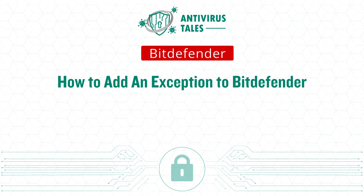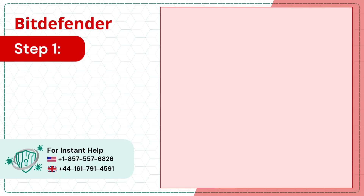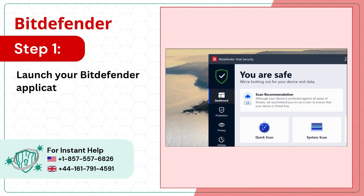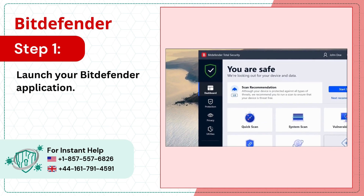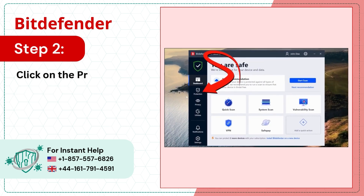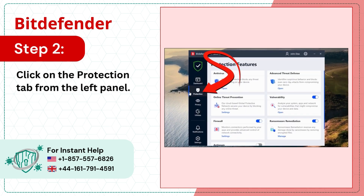How to add an exception to Bitdefender. Step 1: Launch your Bitdefender application. Step 2: Click on the Protection tab from the left panel.